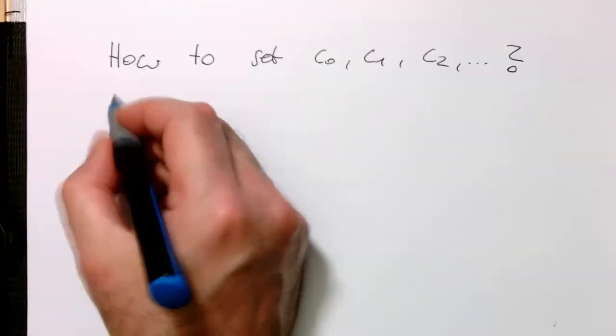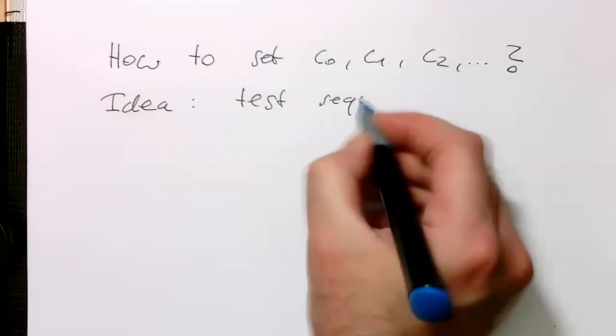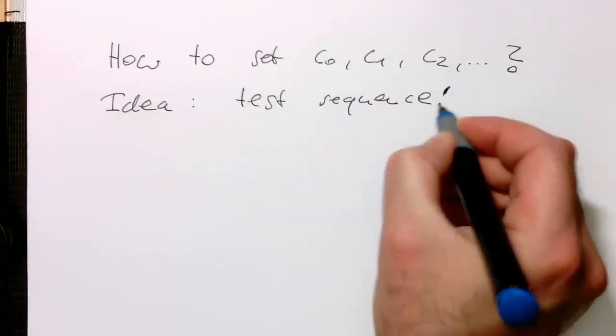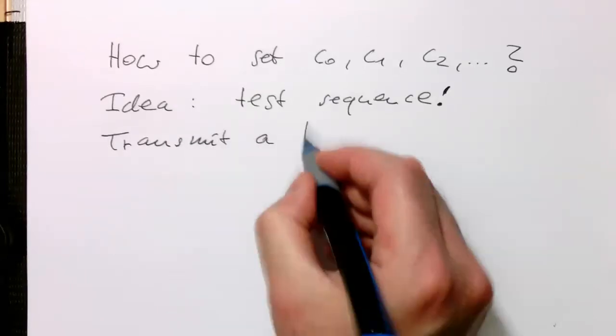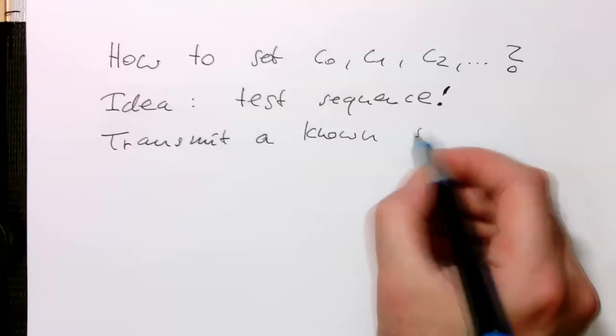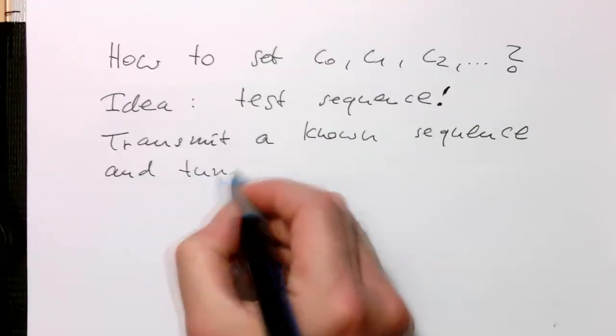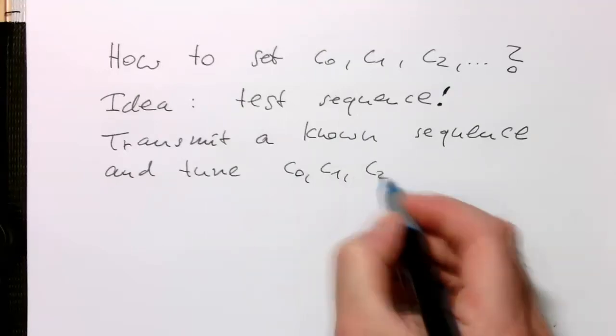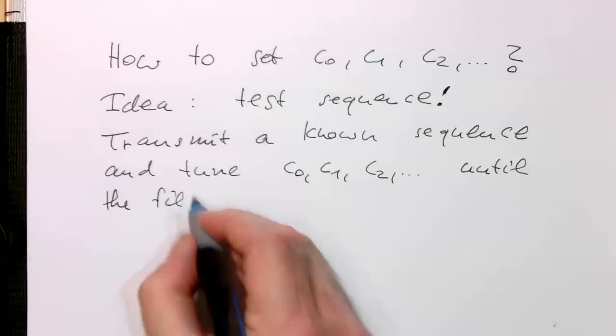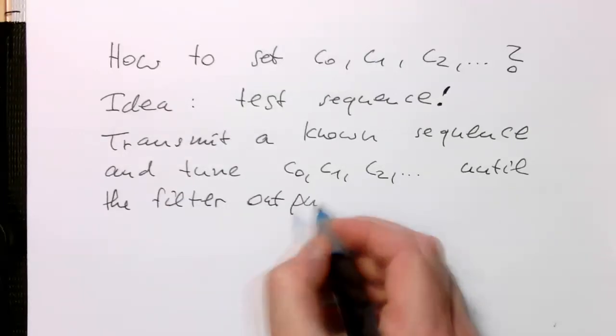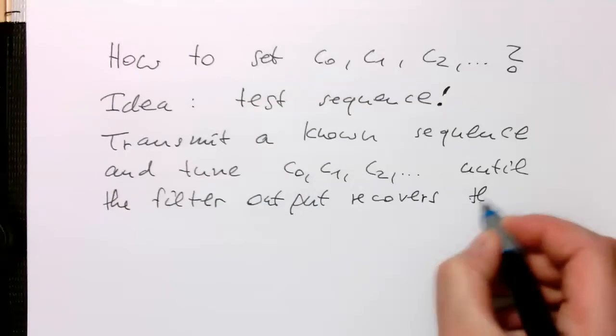And the idea behind this is to do this with a test sequence. So we transmit a known sequence and tune C0, C1, C2 until the filter output recovers this known sequence.